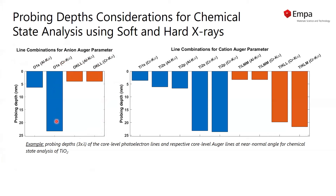If we probe with the hard X-ray source, we will probe much deeper. That means our chemical state analysis would be performed at two different depths for the photo and Auger line, which is not recommended. So we recommend for oxygen Auger parameter studies of oxides to use only the soft X-ray source, combining the oxygen KLL line with the oxygen 1s line at near-constant probing depth.